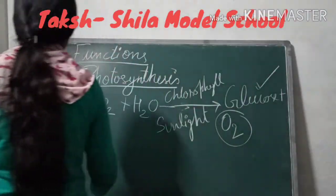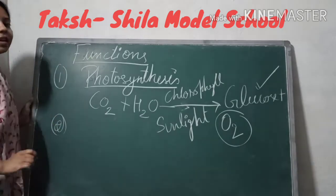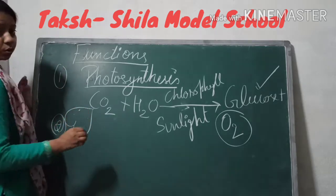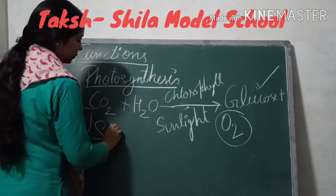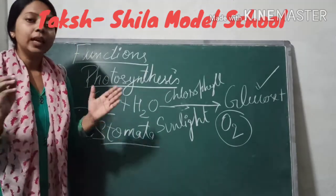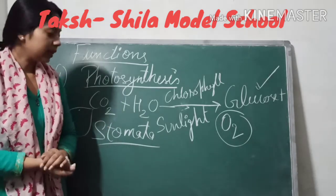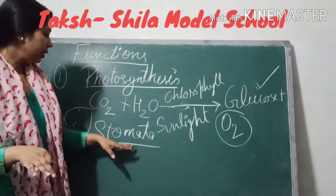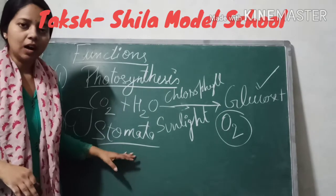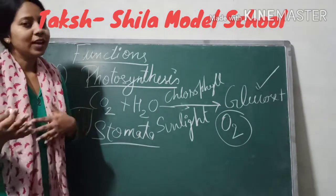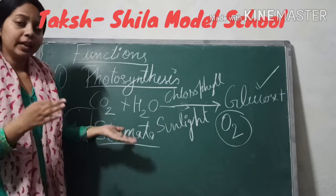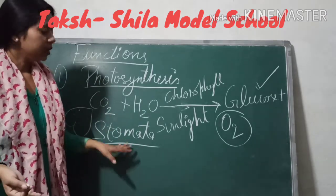There are some pores on the surface of leaves. These pores are named stomata. Stomata help in the exchange of gases. Carbon dioxide is taken in and oxygen is released through stomata. So the exchange of gases happens through these pores, and the plant takes in carbon dioxide and releases oxygen by this process.